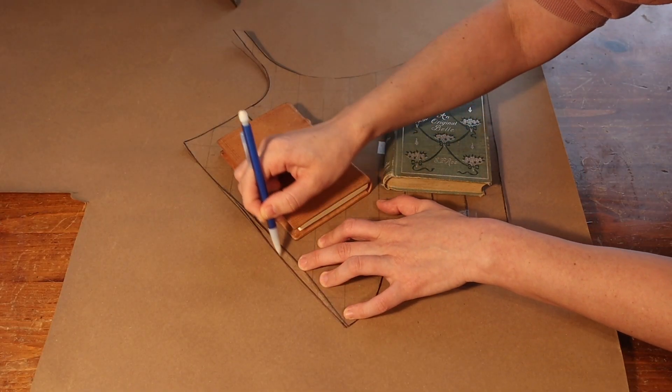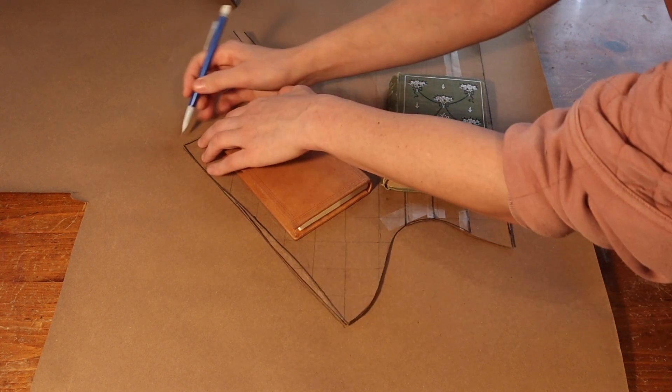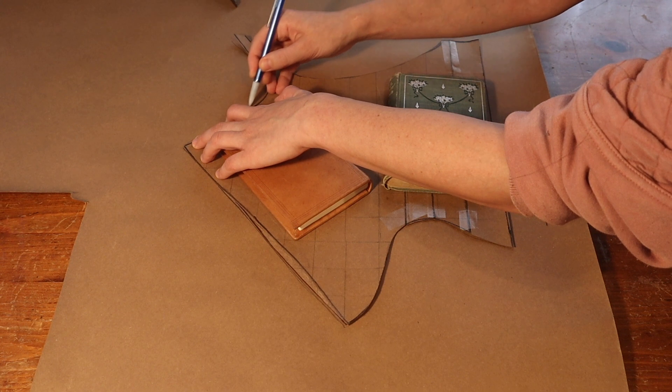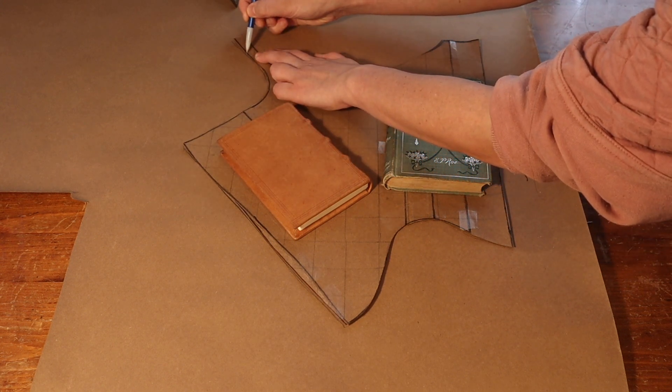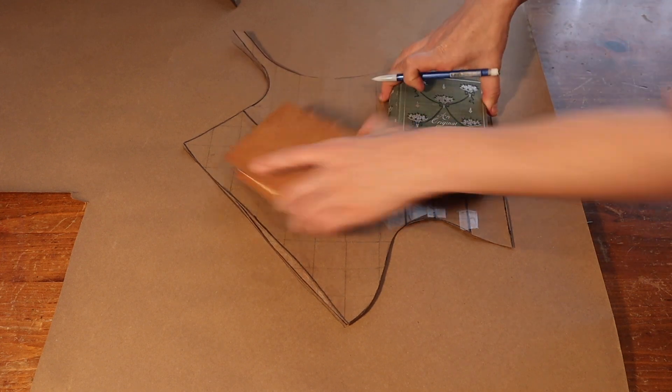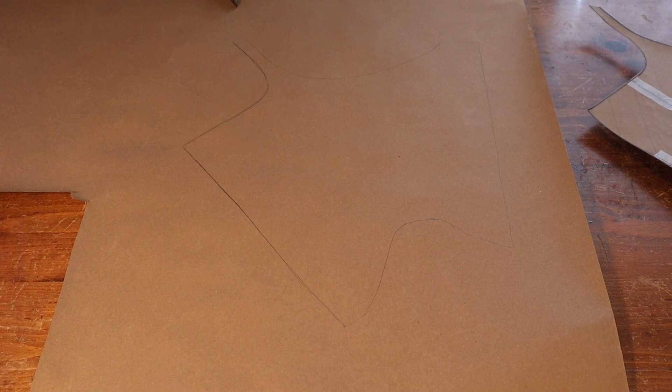I also wanted to lengthen the stays because I am on the long-waisted side and the pattern as drafted ended up a little bit short on me and just kind of hit me in a place that wasn't particularly comfortable or flattering. So I need to lengthen the stays about two inches and the way that I do this is to first draw out the pattern.